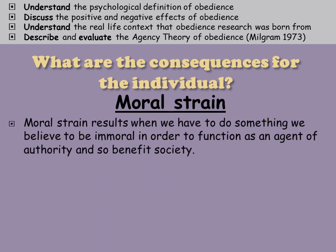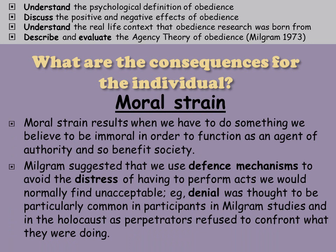A consequence of obedience within the agentic state is something called moral strain. Milgram says moral strain results when we have to do something we believe to be immoral in order to function as an agent of authority. To deal with moral strain, we use defense mechanisms to avoid the distress of accepting that we've broken our morals.